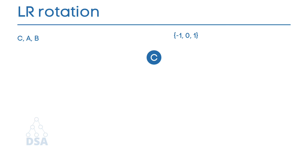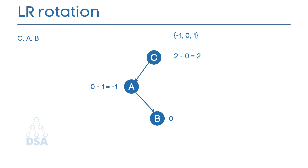For example, insert elements C, A, B. Insert C as the root. A is less than C so insert as the left child. B is less than C so it goes to the left subtree, but A is already there. B is greater than A so insert as the right child of A. The balance factor of B is 0; A's balance factor is 0 minus 1 equals minus 1 since it has one right child and no left child — this satisfies the rule. C's balance factor is 2 minus 0 equals 2, so it is not balanced and we must perform LR rotation.